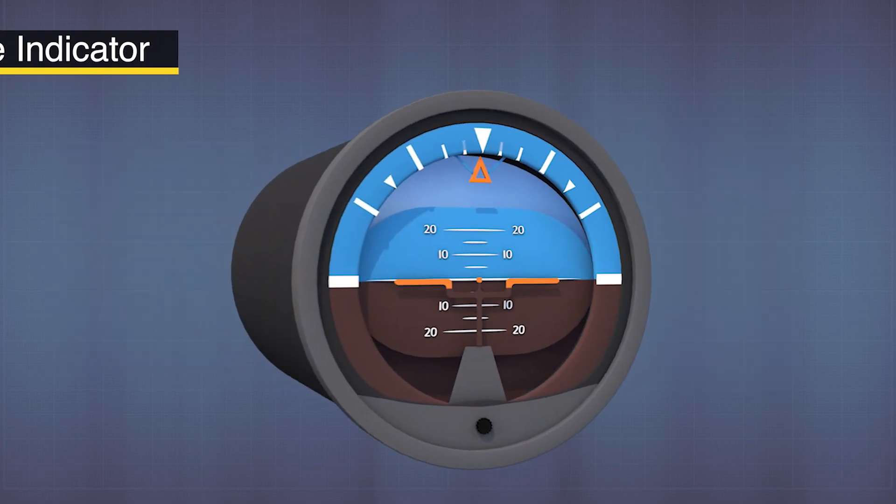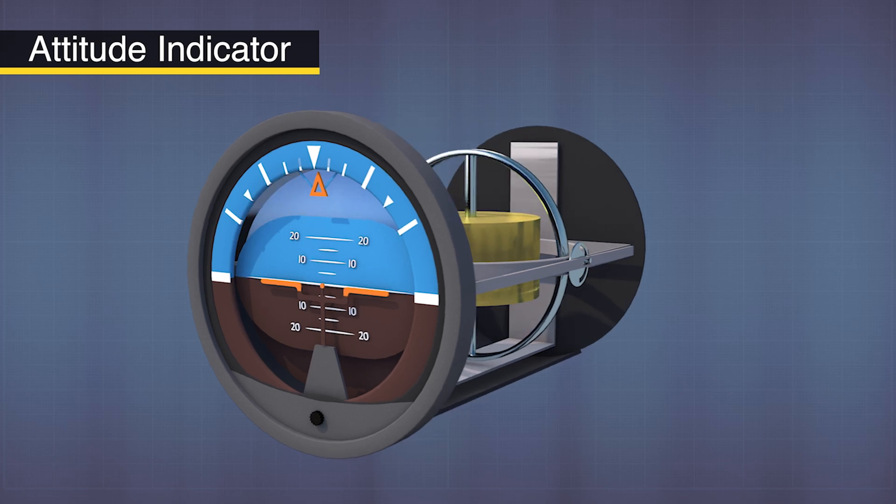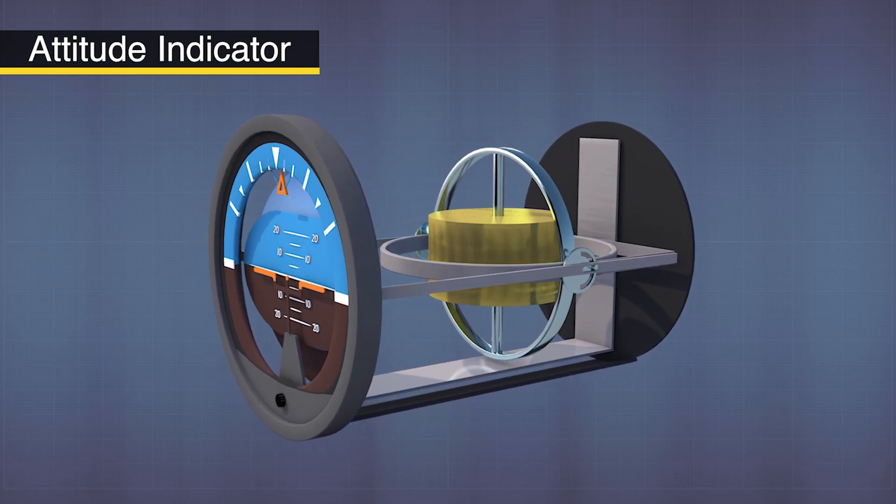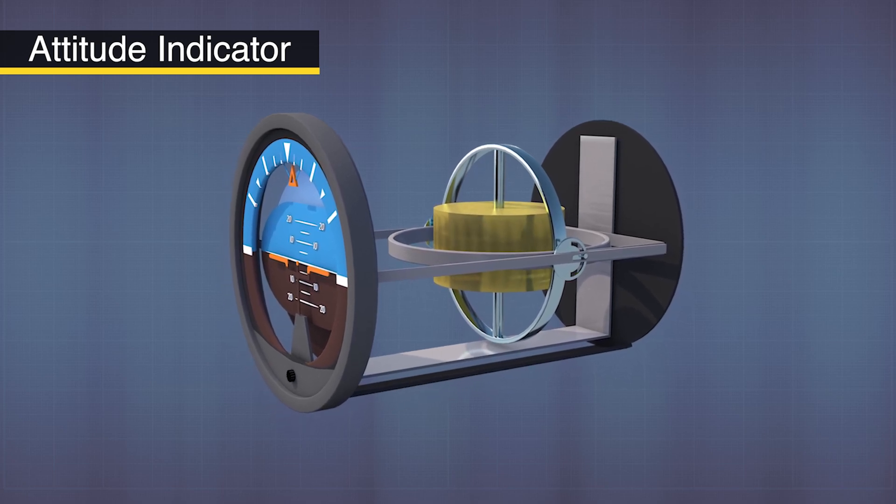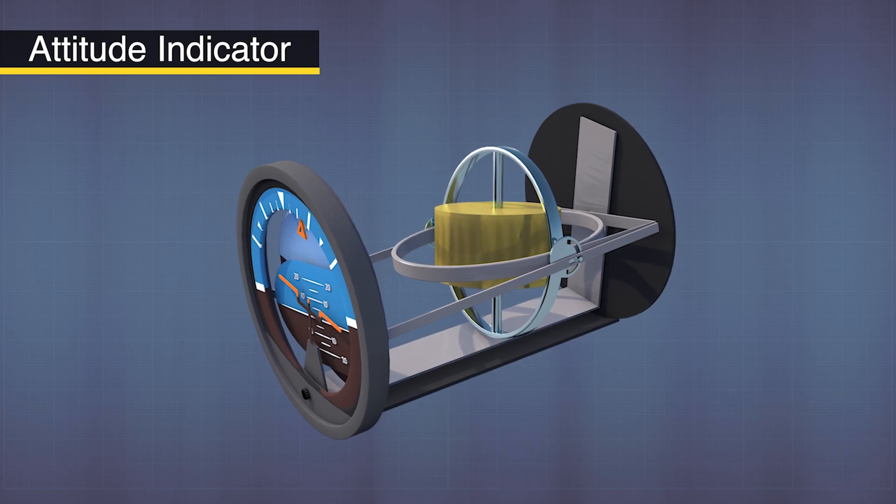One of the more fascinating instruments on the vacuum system is the attitude indicator. At the heart of the attitude indicator is a gyro that spins parallel to the horizon. Using the rigidity in space principle like we talked about earlier, the gyroscope maintains its orientation to the horizon and the instrument pitches and banks around the gyro using gimbals.